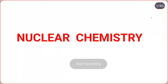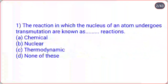Let us see multiple choice questions from topic nuclear chemistry. First question: the reaction in which the nucleus of an atom undergoes transmutation are known as dot-dot reactions. Options are chemical, nuclear, thermodynamic, none of these. So correct option is nuclear reaction, that is option B.